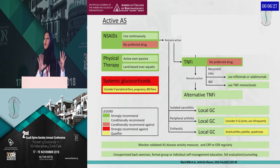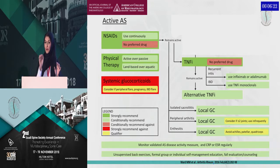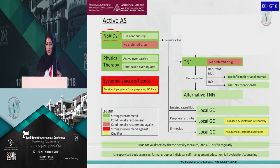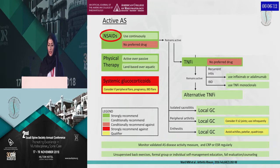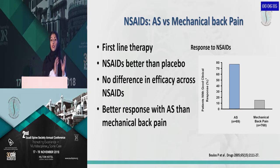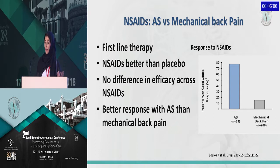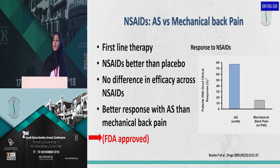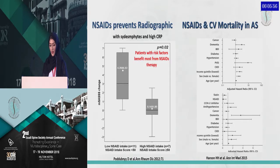This is the guidelines we use, and this is the beauty of rheumatology. I don't want you to remember all of it, but I'll give you a hint about when to consider referring the patient to us and what you could start. Let's begin with the first one — the NSAID, or non-steroidal anti-inflammatory. It's the first-line therapy, it's better than placebo, there's no difference between one NSAID and another, and as Dr. Ziad said, it has a better response than mechanical back pain. This is the treatment which is FDA-approved.